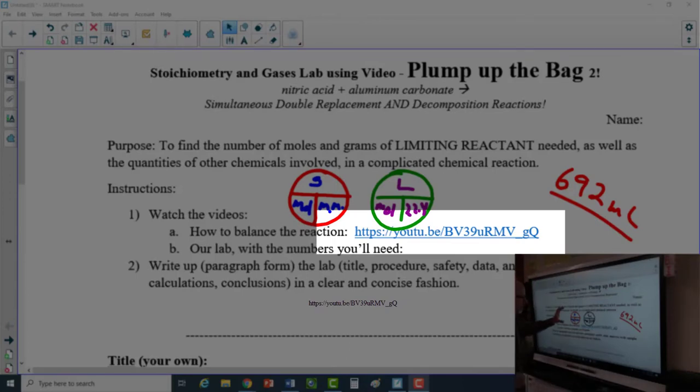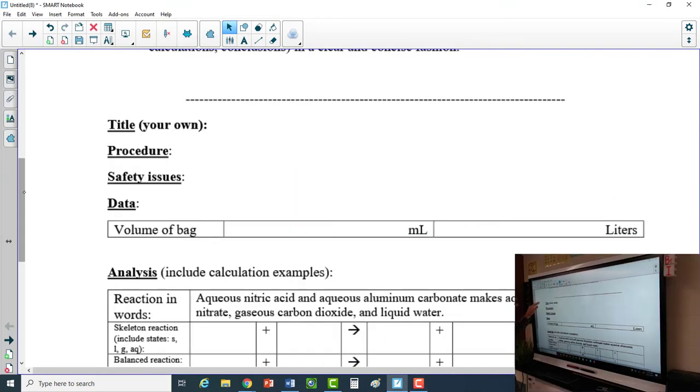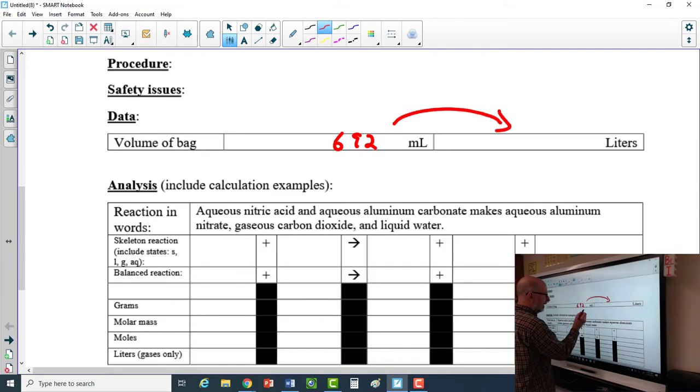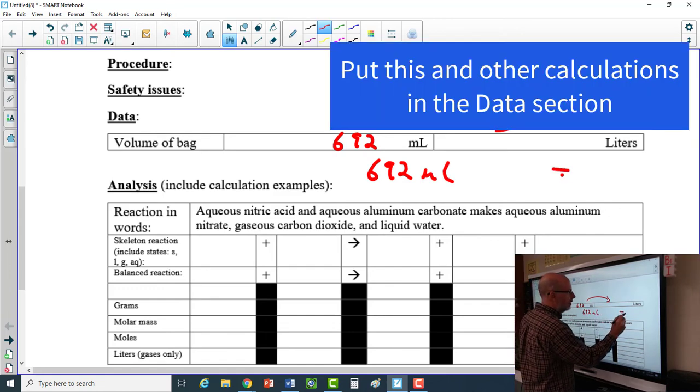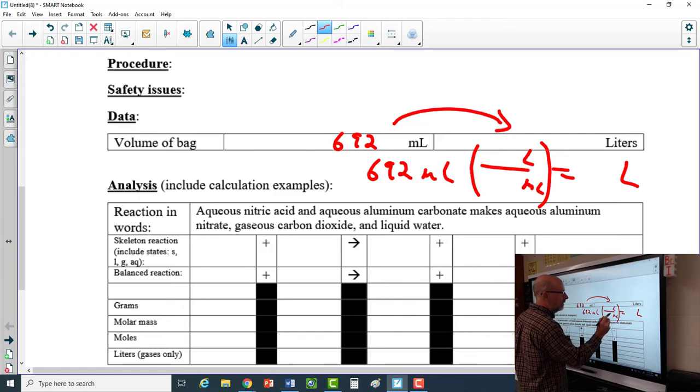You probably need these two calculators and the 692 milliliters. I'd ask you to come up with a nice title of your own, a procedure, what happened here, what safety issues were involved, and then the data. The main data you're going to need is your 692 milliliter bag with three sig figs. Show me how you calculated the liters using the factor label method. Below you'll show me a calculation: 692 milliliters equals how many liters. You need a conversion factor - milliliters on the bottom, liters on the top.